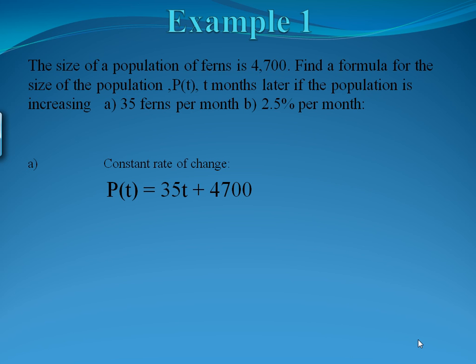We plug t, the number of months, in and that gives us our constant rate of change. For part B, we're increasing by a percentage, which means we have a percent rate of change. Because it's per month and not continuous, we use the A form of our growth equation with an initial amount of 4,700. So our population equation becomes P of t equals 4,700 times 1.025 to the t.